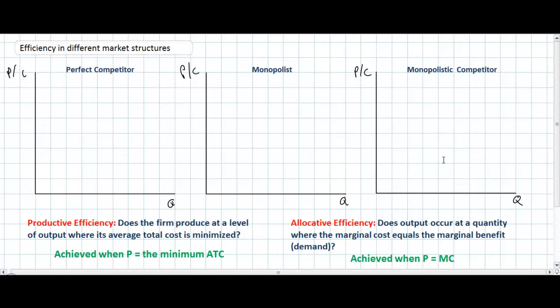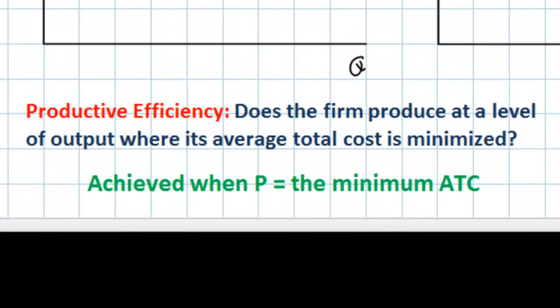Before we get into our discussion about whether or not firms in these different industries are efficient, we must first define what is meant by efficiency. There are two types of efficiency in economics. The first type is known as productive efficiency. To determine whether a firm is productively efficient, we must determine whether or not that firm is producing in the least cost manner — in other words, whether firms produce at the quantity at which their average total cost is at its lowest point.